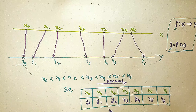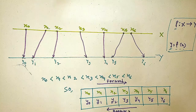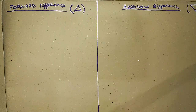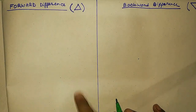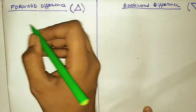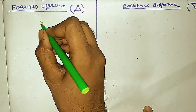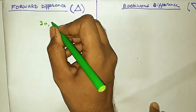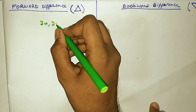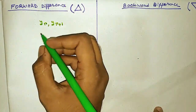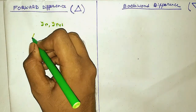Moving in the direction of increasing suffix is called the forward direction, and moving in the decreasing direction is called the backward direction. This is important. Now we are going to understand forward difference and backward difference. There are n plus 1 y values from y0 to yn, and we are going to take any two consecutive values — let's say yr and yr plus 1.